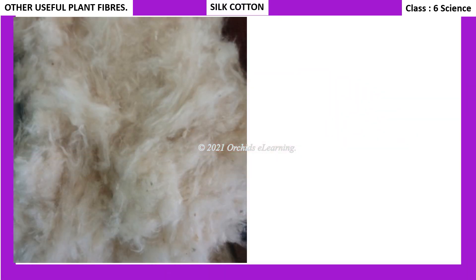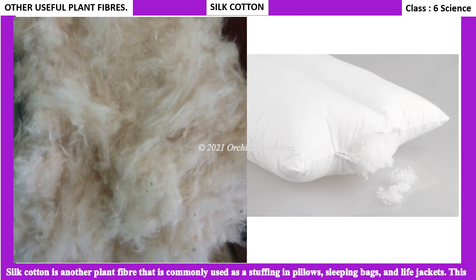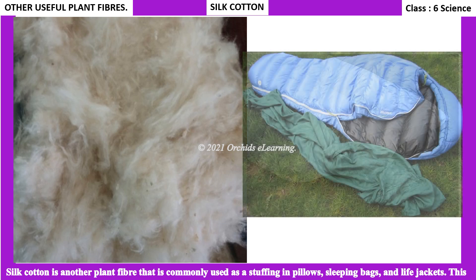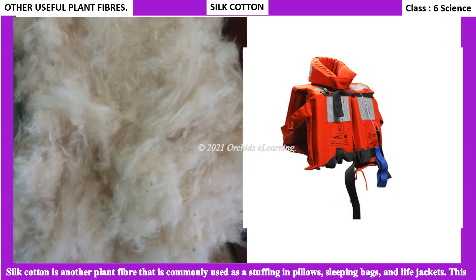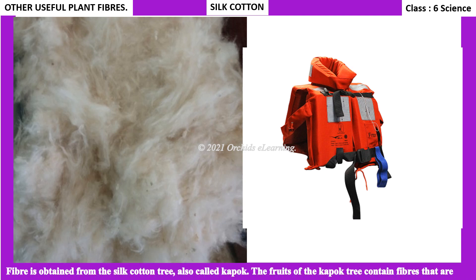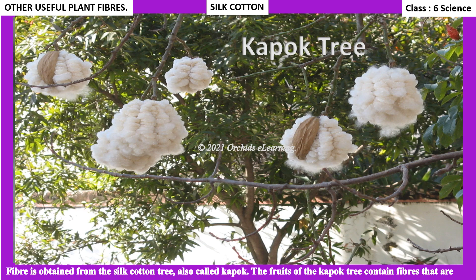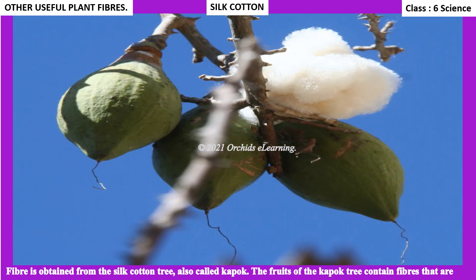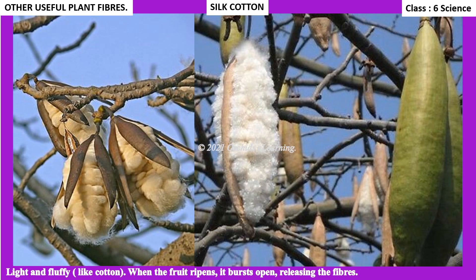Silk cotton is another plant fiber commonly used as stuffing in pillows, sleeping bags, and life jackets. This fiber is obtained from the silk cotton tree, also called kapok. The fruits of the kapok tree contain fibers that are light and fluffy like cotton. When the fruit ripens, it bursts open releasing the fibers.